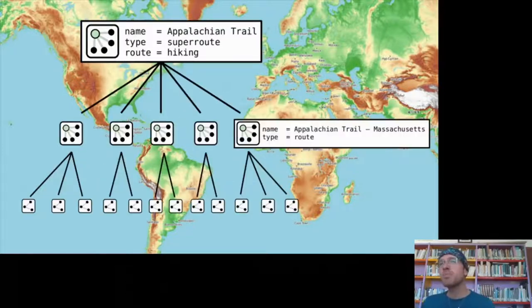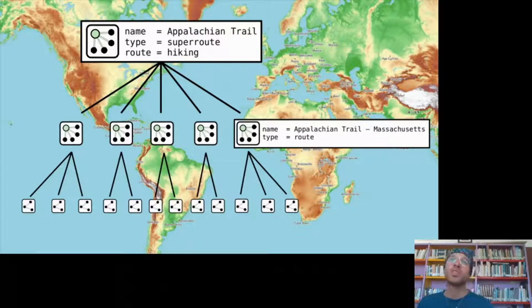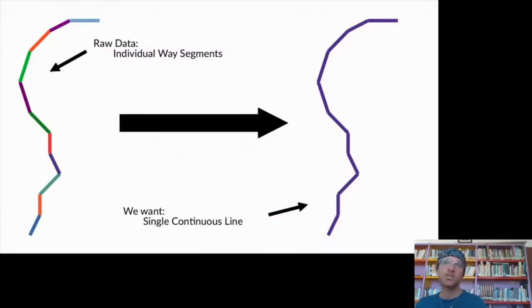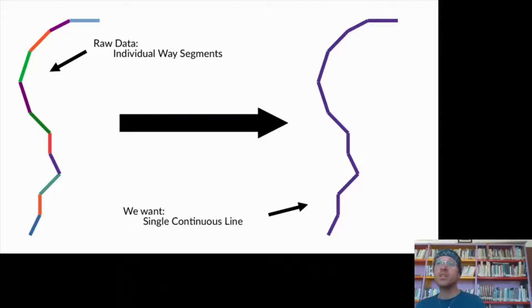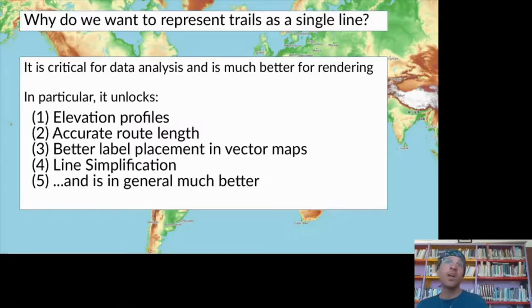These trails are relations that have type equals route and route equals hiking, and their members have highway ways which ideally have a surface and SAC scale attached. There's also type super route, which is a hierarchical relation allowing us to break down trails into different route sections.